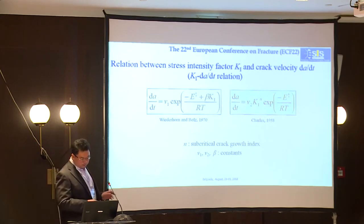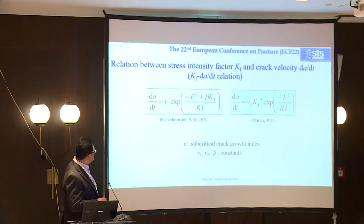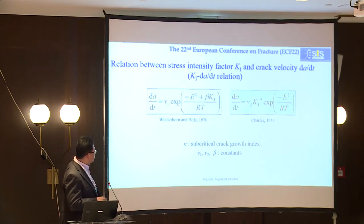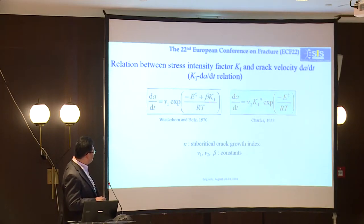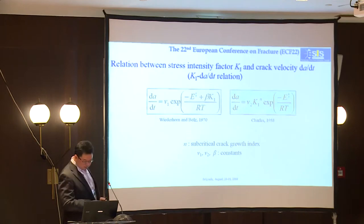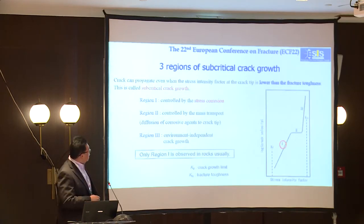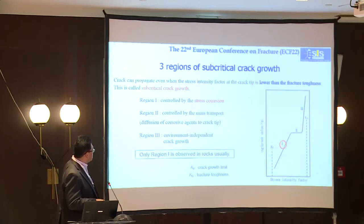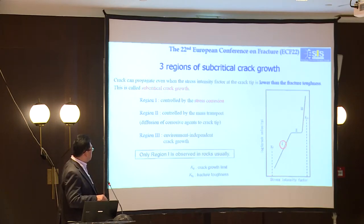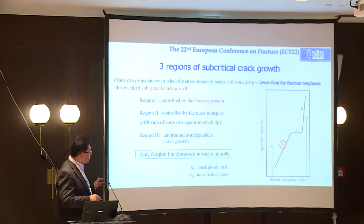I use an analysis of sub-critical crack growth in which the stress intensity factor K₁ and the crack velocity da/dt can be related by these equations. We can consider the effect of environmental conditions by changing T, the absolute temperature, and E, the activation energy of the stress corrosion reaction. In region 1, where the stress intensity is very low, the crack velocity is controlled by the stress corrosion reaction — a kind of chemical reaction.